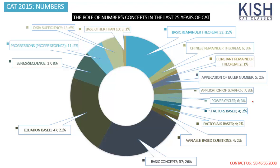Progressions are numbers given in a proper order, while sequences are numbers given in a random order — these also dominate. On the other side of the pie chart we have Cheney's remainder theorem, constant remainder theorem, Euler number, LCM/HCF, power cycles, factors, factorials, and variable-based questions — eight different things with very limited weightage. The three dominant areas are equation-based, basic concepts, and basic remainder theorem. However, I strongly suggest not ignoring any single topic, because even limited-weight topics can cost you a significant percentage of questions.